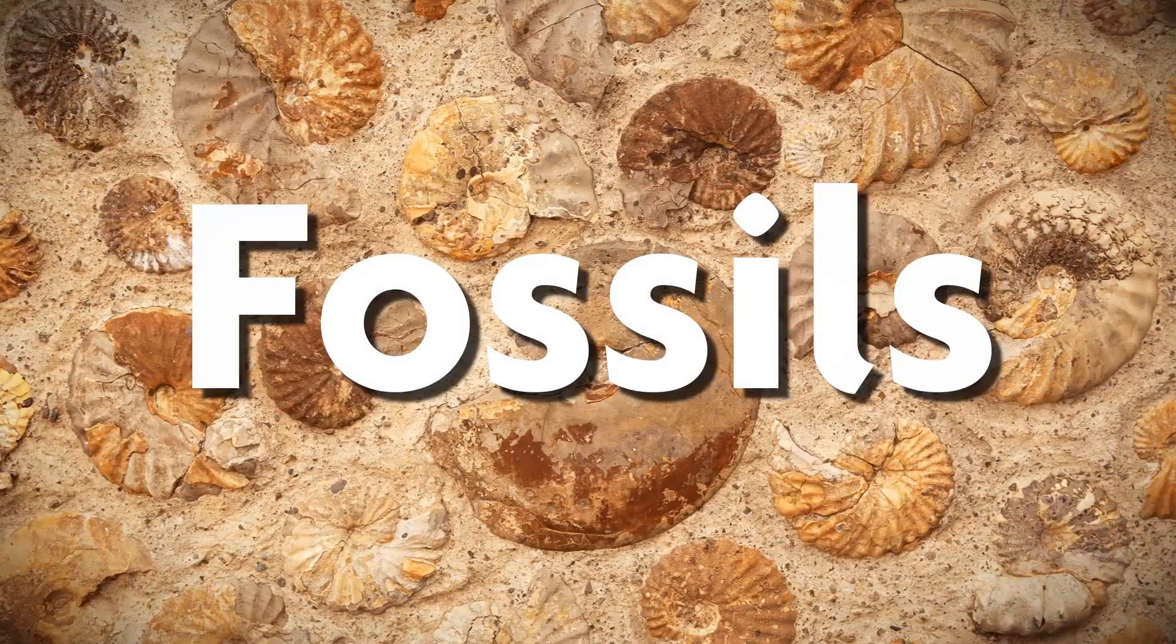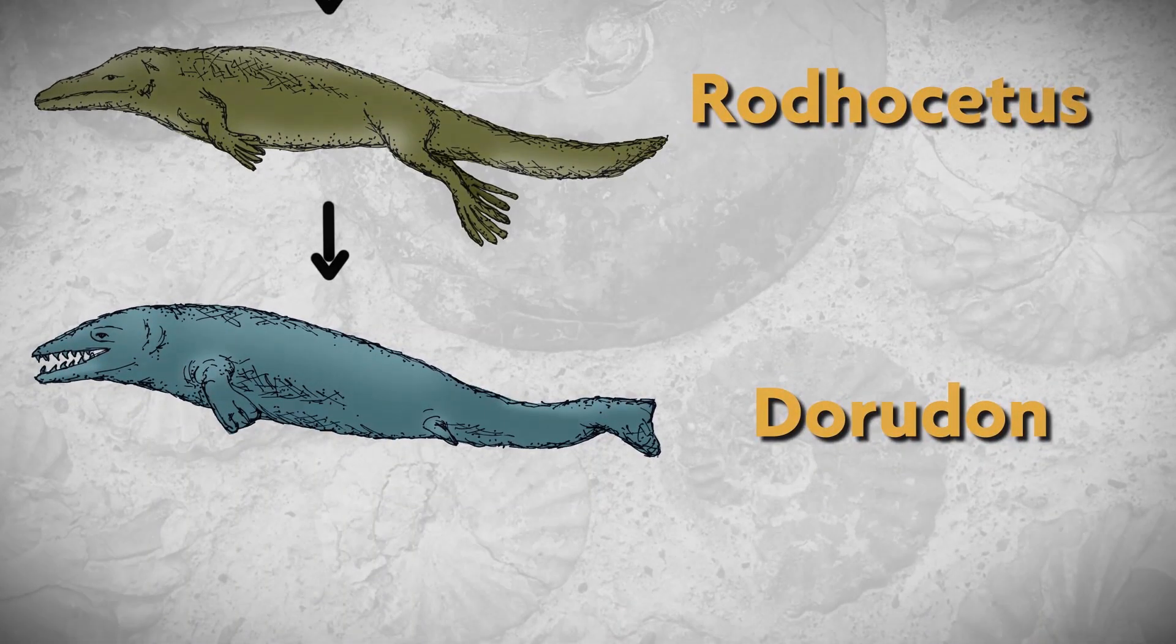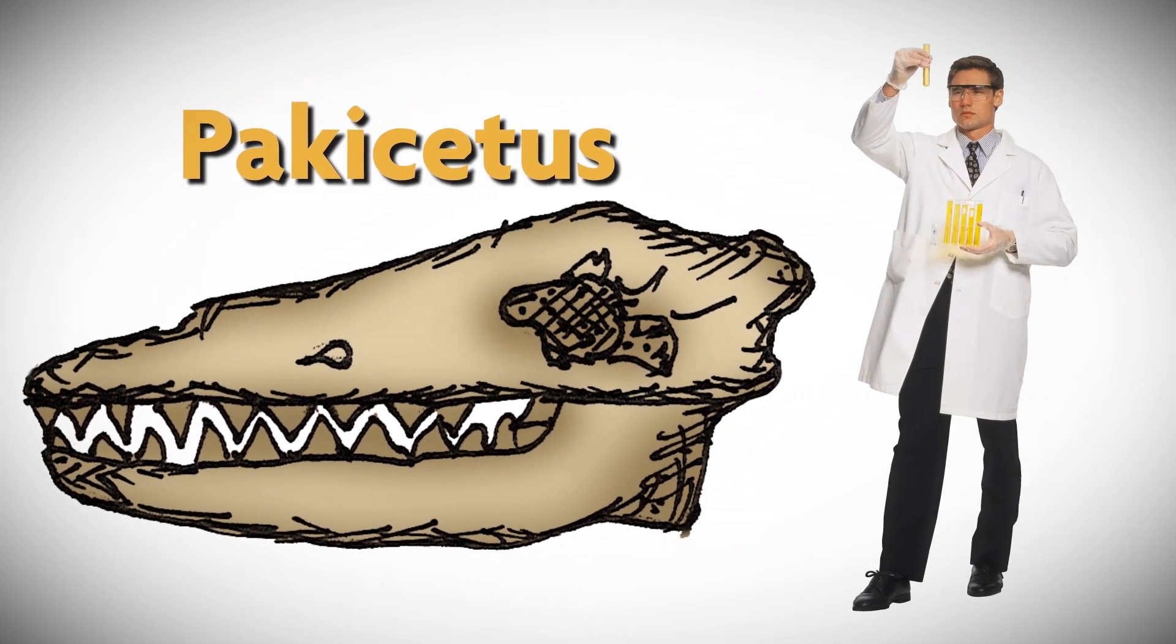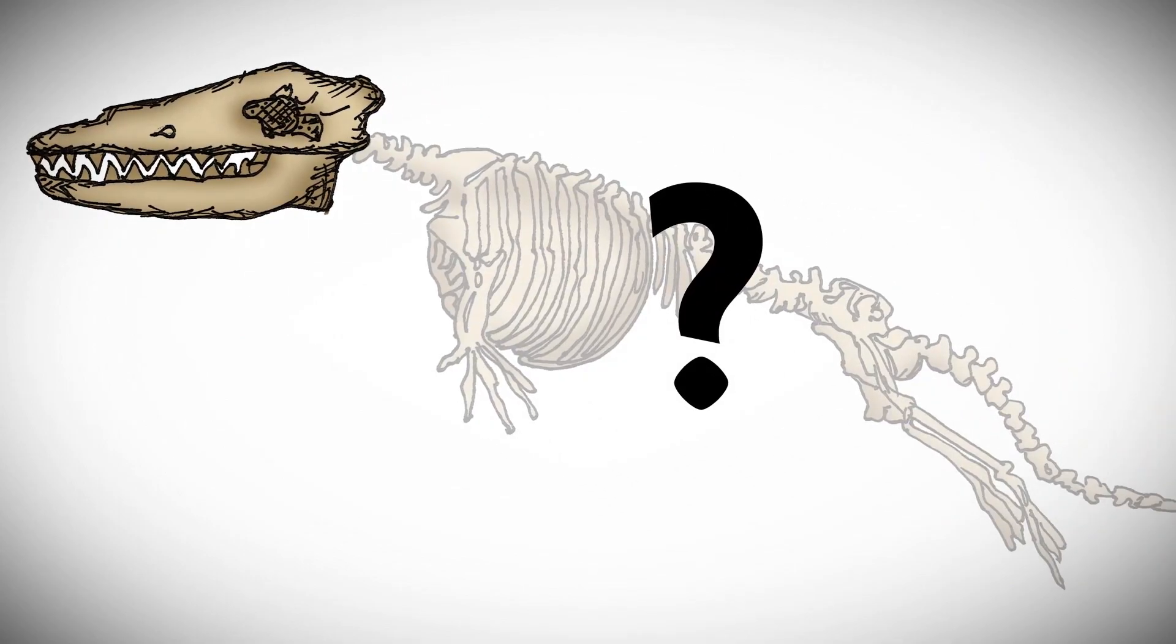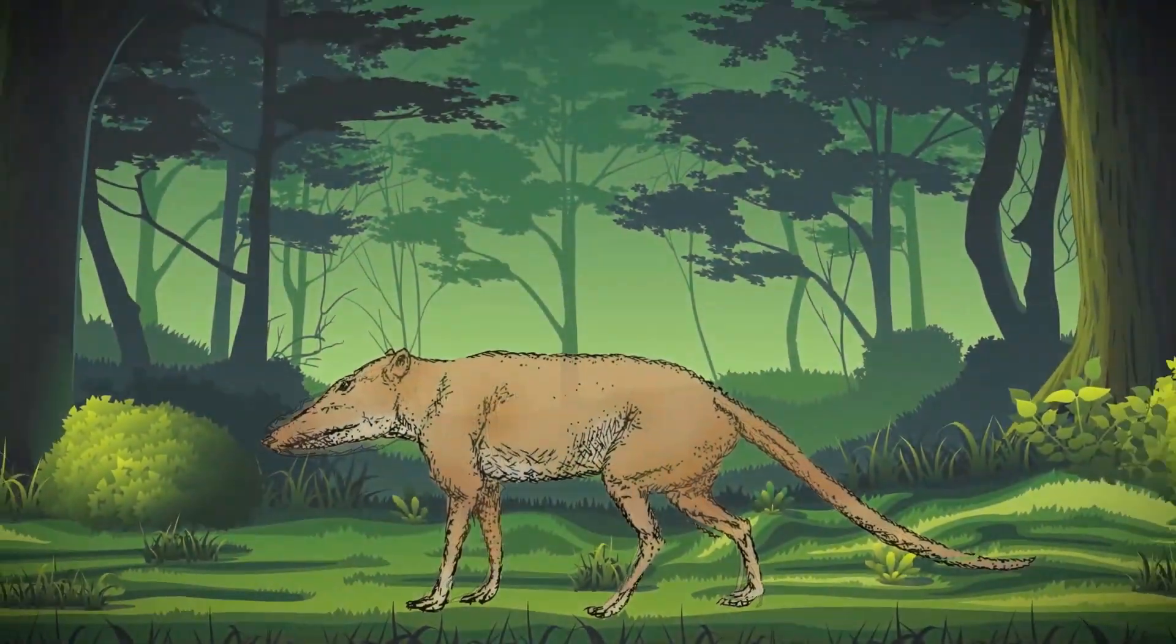They claim that fossils show a clear evolutionary progression from land mammals to whales. But many of these fossils are incomplete. Take the famous fossil Pachycetus. Scientists first found an incomplete skull, and it didn't even have a body. Later, a more complete Pachycetus discovery revealed perfectly normal legs. Pachycetus lived on land.